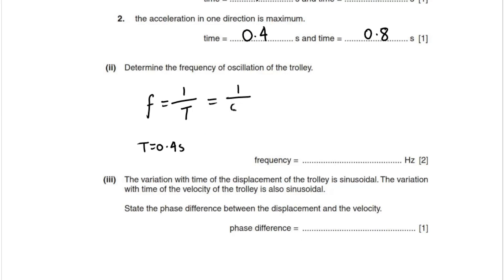Part 3 says the variation with time of displacement of the trolley is sinusoidal. The variation of time of the velocity of the trolley is also sinusoidal. State the phase difference between the displacement and velocity. Well, the phase difference between velocity and displacement is always 90 degrees. You can also write π by 2 radians.